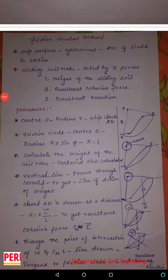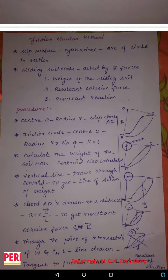In the Finite Slope Analysis, this method is the friction circle method. In this method, we will analyze a slip surface or arc of a circle. If we get a slip circle, we will check the slip circle correctly.